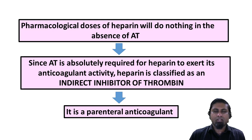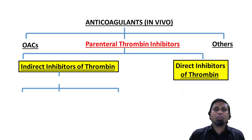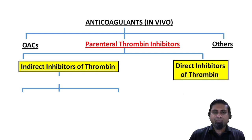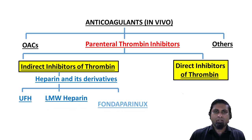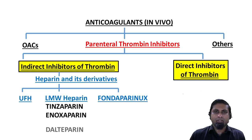Since antithrombin is absolutely required for the anticoagulant activity of heparin to take effect, heparin is classified as an indirect inhibitor of thrombin — it is a parenteral anticoagulant. When we classify anticoagulants into oral anticoagulants, parenteral thrombin inhibitors and others, we can classify the parenteral thrombin inhibitors into indirect and direct inhibitors of thrombin. The indirect inhibitors include heparin and its derivatives: unfractionated heparin, low molecular weight heparin, and fondaparinux. Examples of low molecular weight heparin include tinzaparin, enoxaparin, and dalteparin.